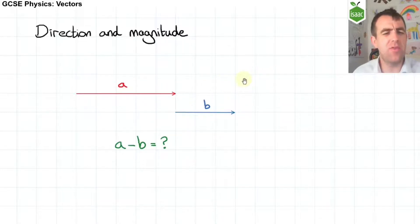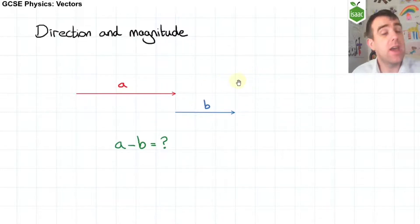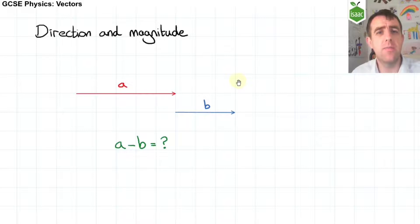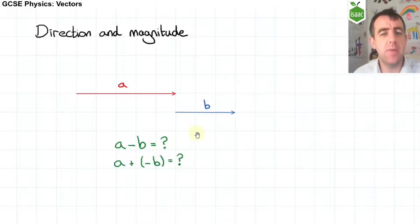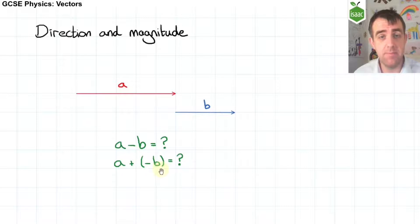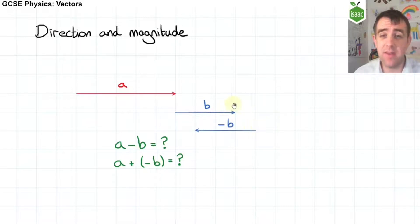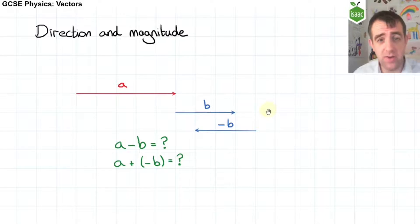So what about subtracting vectors? Well, the same mathematics you learnt in primary school apply here. a minus b is the same as a plus minus b. A minus vector is the same as a plus vector, but in the opposite direction.